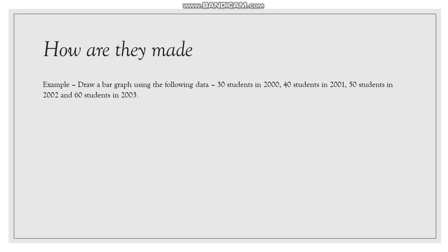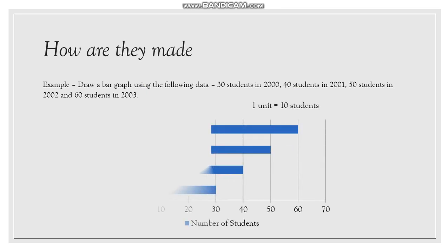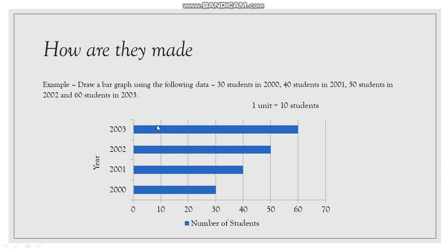Draw a bar graph using the following data. Now here is the data and here is the graph. We can see 1 unit equals to 10 students. So here, what is 1 unit? 1 unit is like between 0 and 10. There are 10 units. So in 2003, there are 60, in 2002, 50, in 2001, there are 40. So these are the number of students and this is the year.